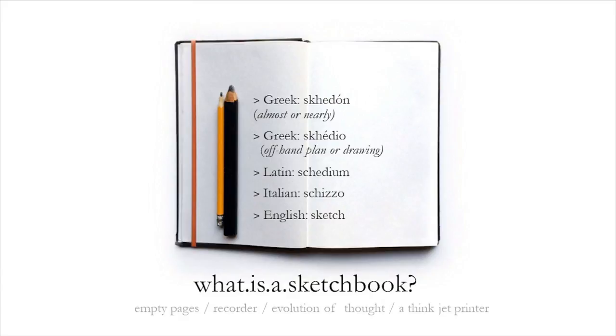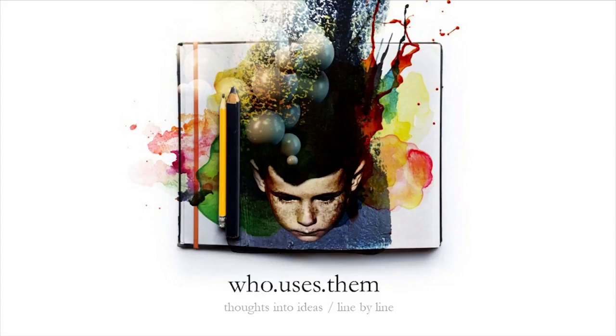What is a sketchbook? The etymology should be helpful. Ancient Greek, the word schedon means almost or nearly. It becomes schedio, an offhand plan or drawing. In Latin, it becomes schedium, schizo in Italian, and eventually becomes sketch. Sketchbook is really an empty book, a book of empty pages, not even lines to restrict mental flow.